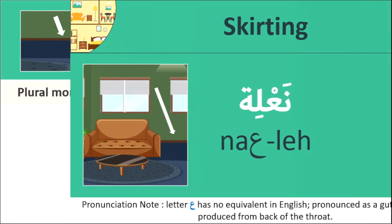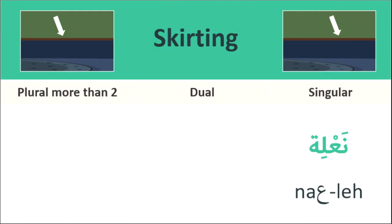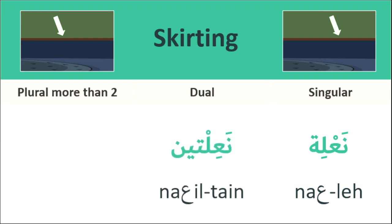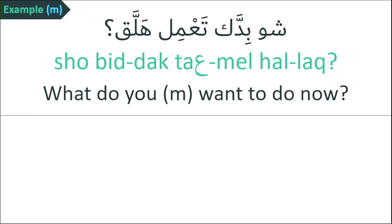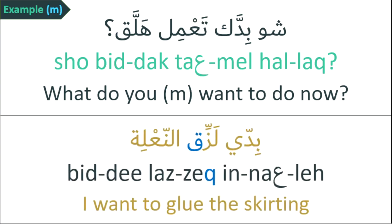The next one is skirting: 'na'le'. Singular form: 'na'le'. Dual form: 'na'ltayn'. Plural form: 'na'lat'. Example, talking to a man: 'What do you want to do now?' The reply is: 'na'ltayn — I want to glue the skirting.' Note: the letter qaf (Q) is silent here.